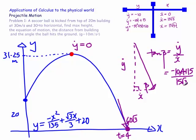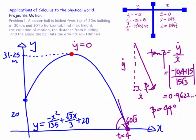Taking the absolute value to get the acute angle, tan(beta) is approximately 0.9622, which gives beta approximately 44 degrees. So the ball hits the ground at roughly 44 degrees to the horizontal. This technique can be used to find the angle at any particular time. Thanks for watching — bye for now.